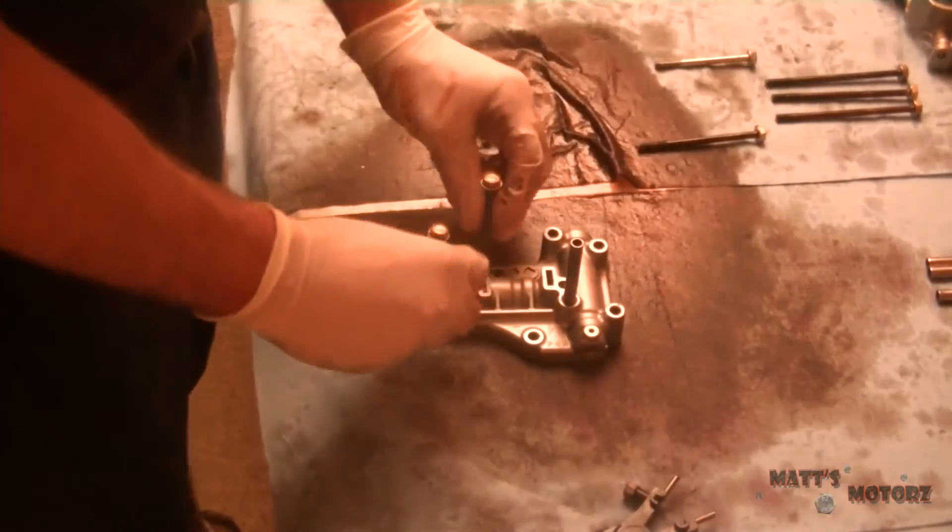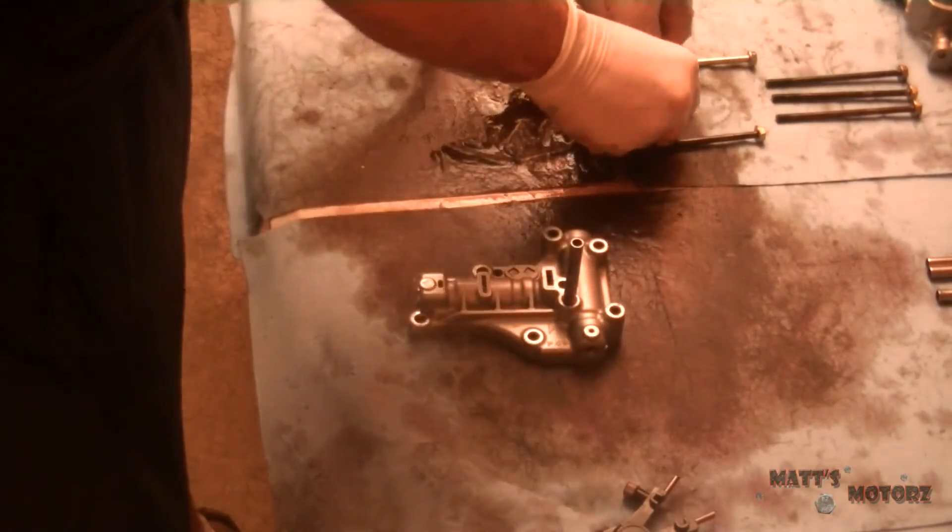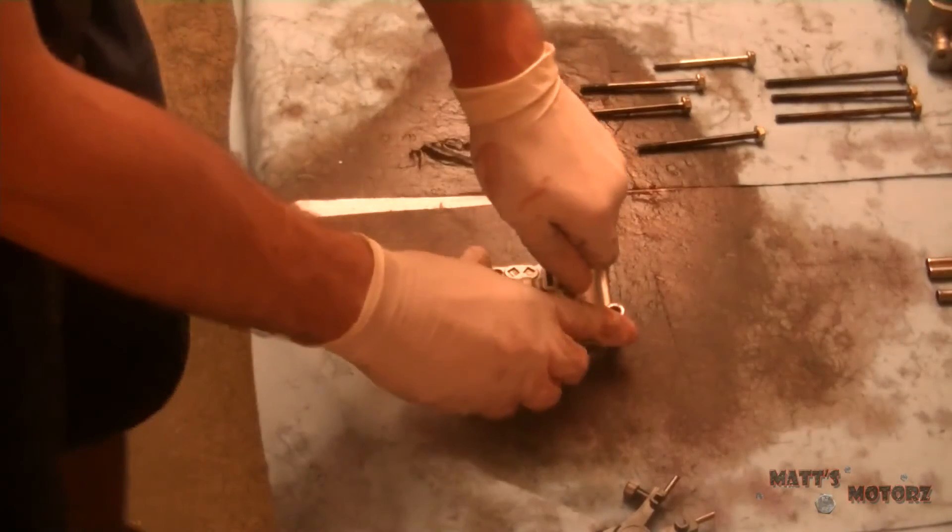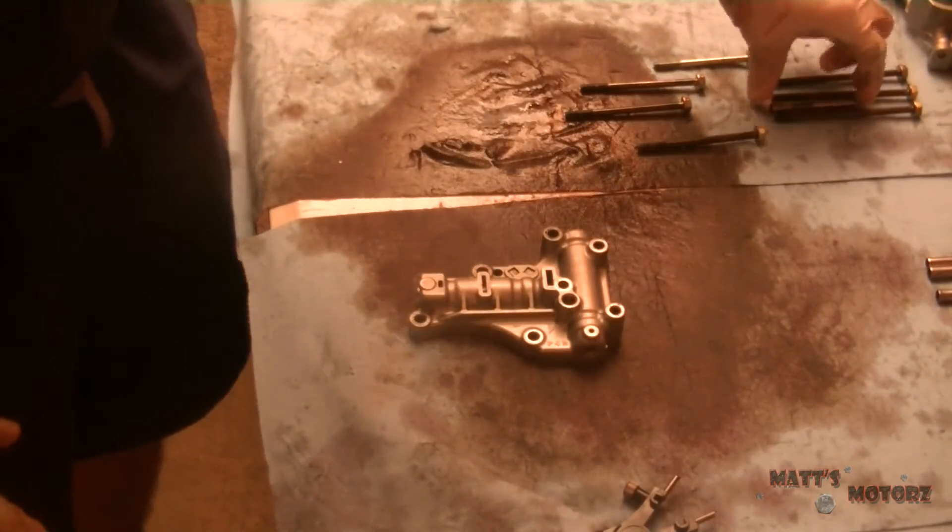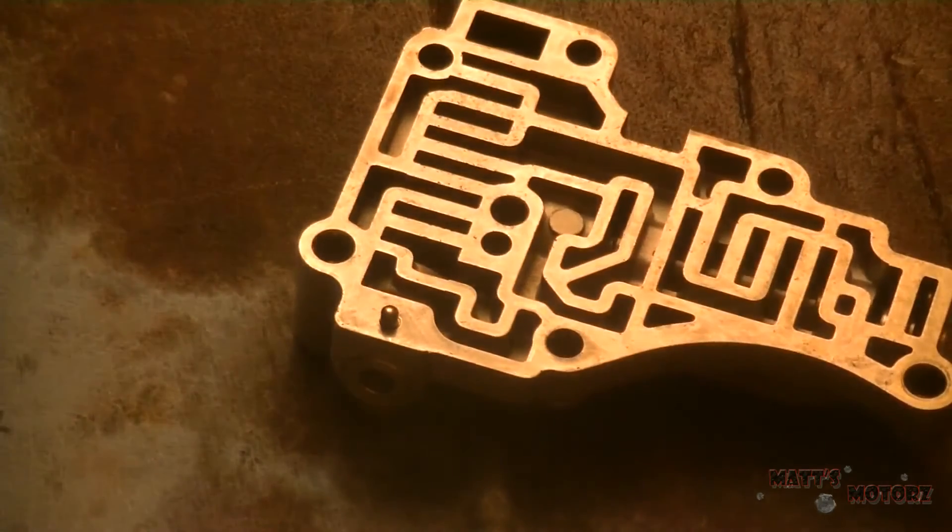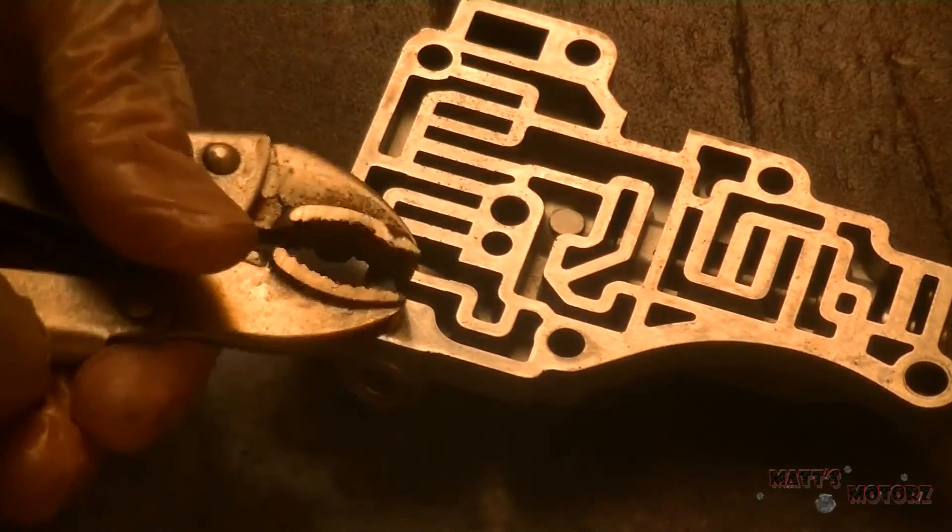Lastly we have the lockup valve body. Taking the bolts out and the orientation that they come out, so I can put it back in the same way. We have this feed pipe. And there are two valves on this.